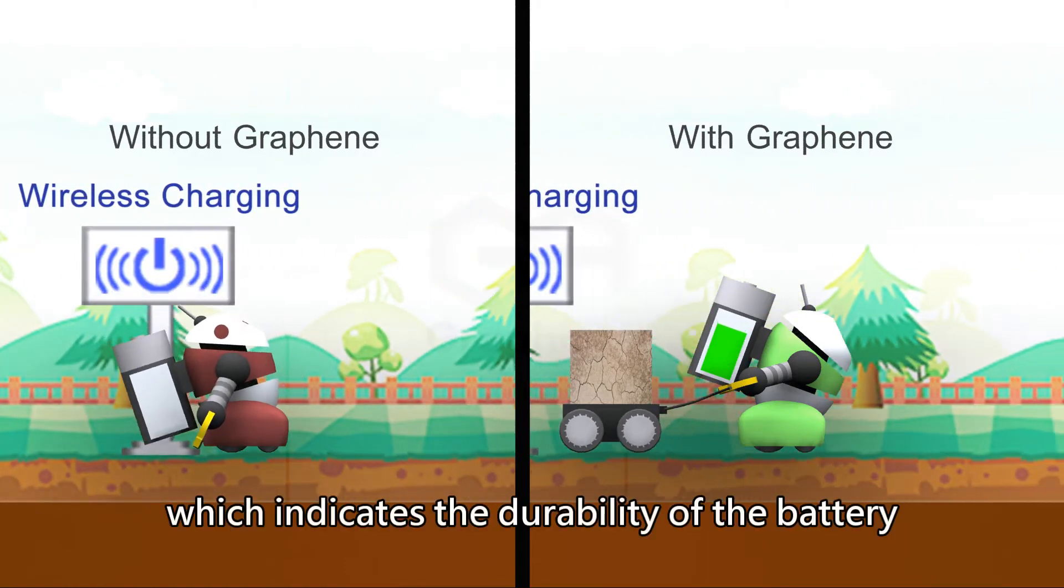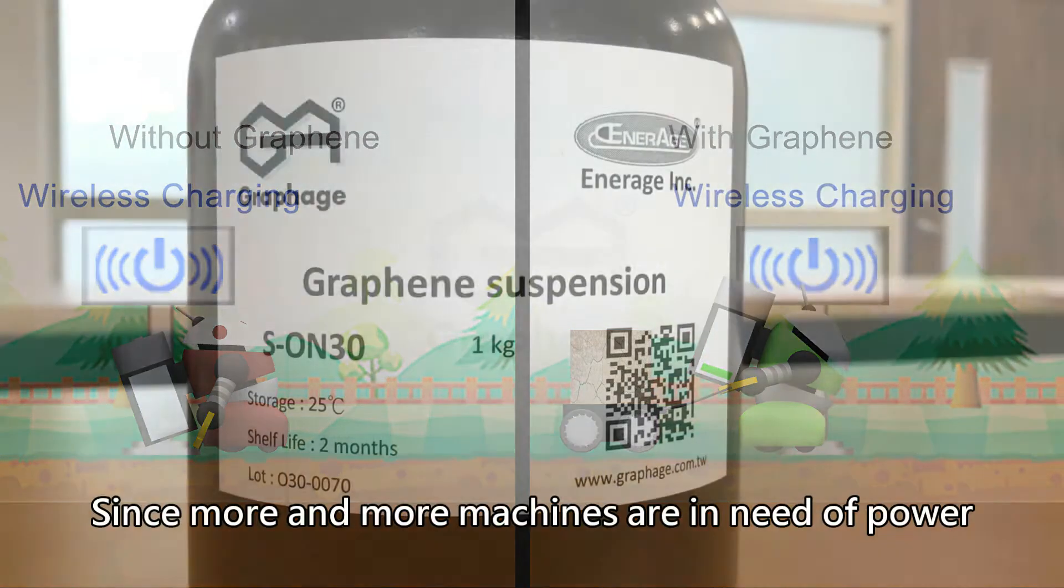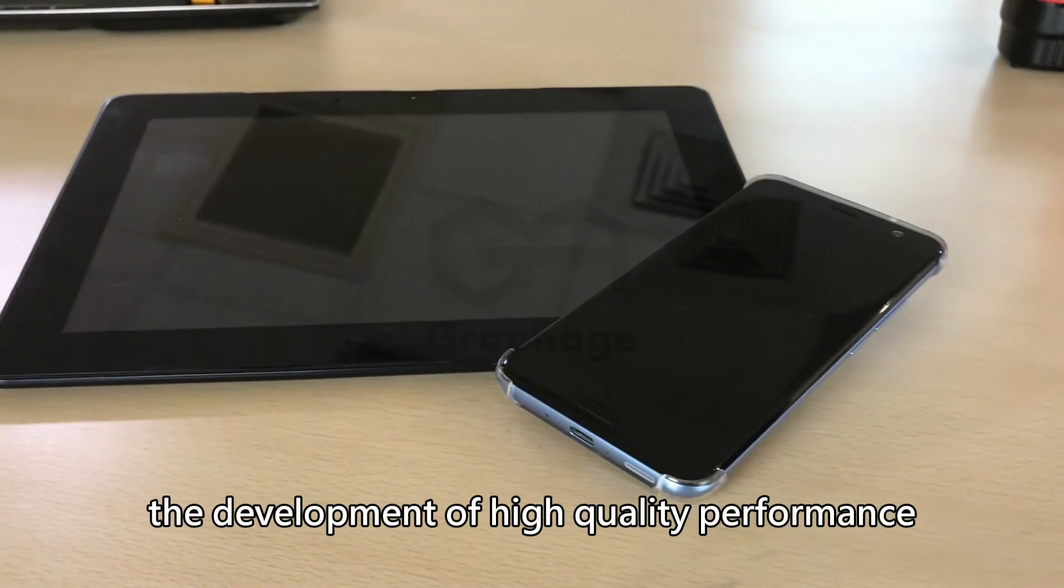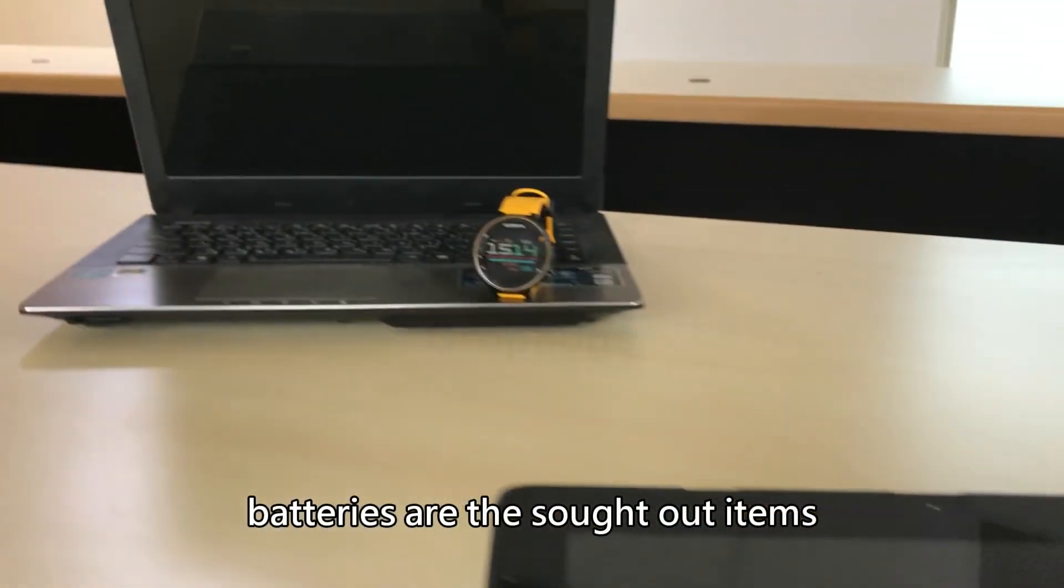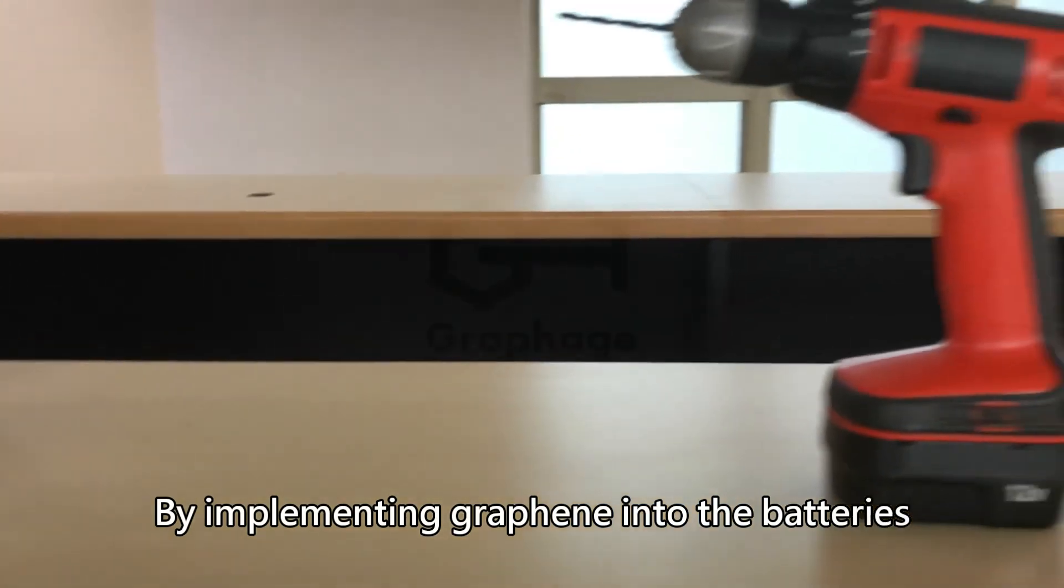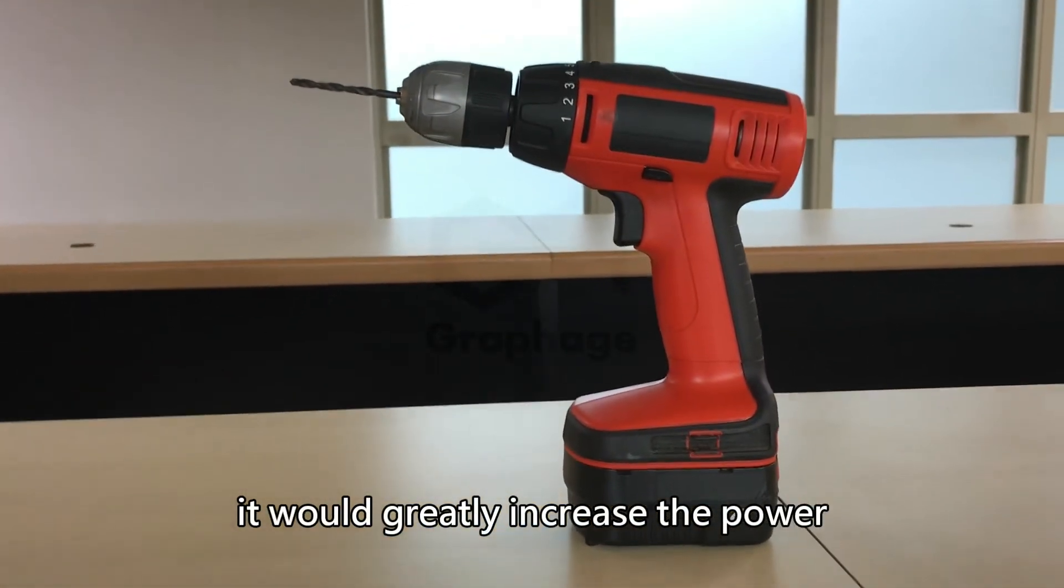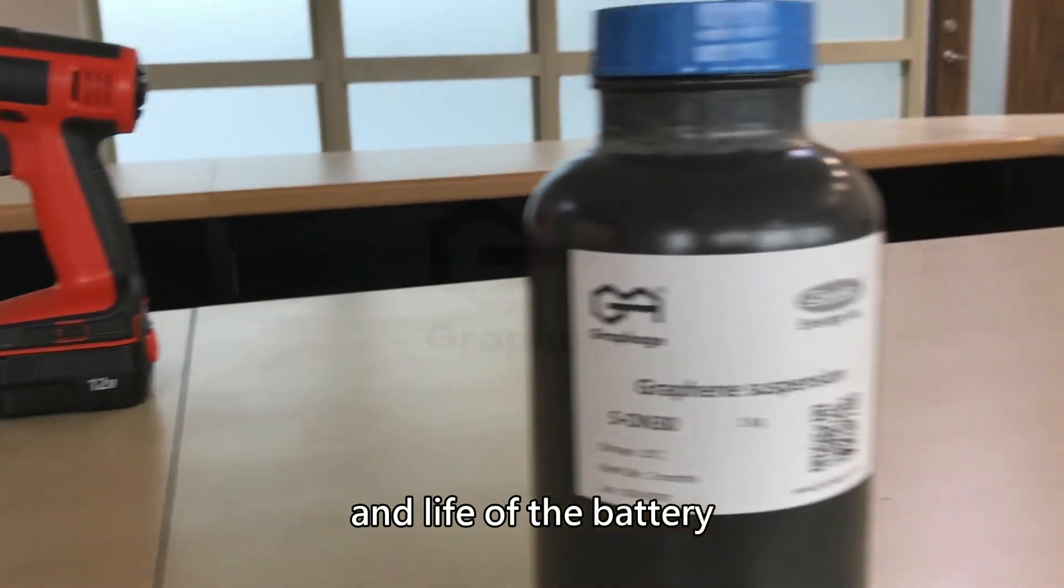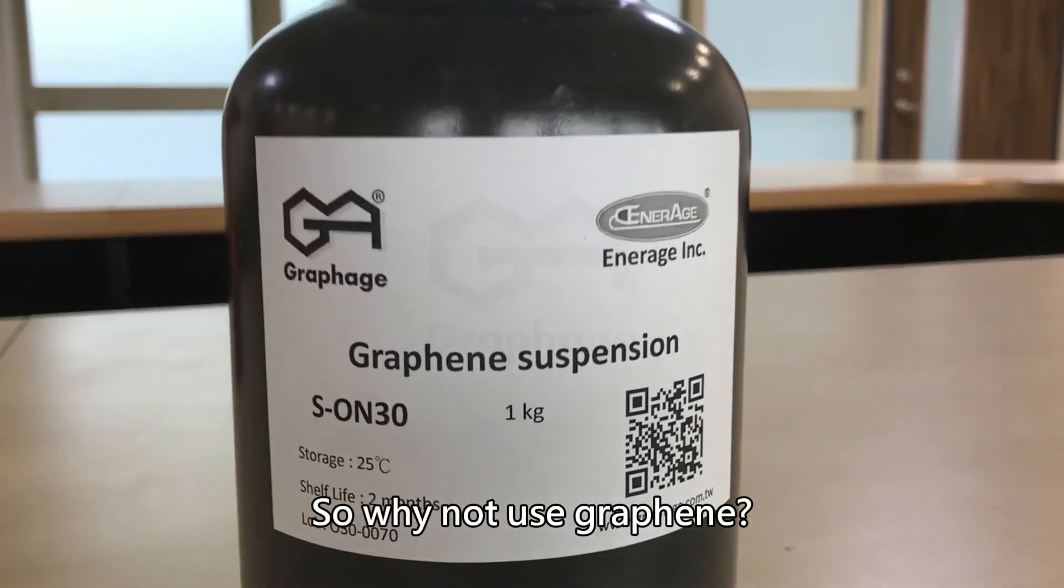which indicates the durability of the battery. Since more and more machines are in need of power, the development of high-quality performance batteries are the sought-out items. By implementing graphene into the batteries, it would greatly increase the power, durability, and the life of the battery. So why not use graphene?